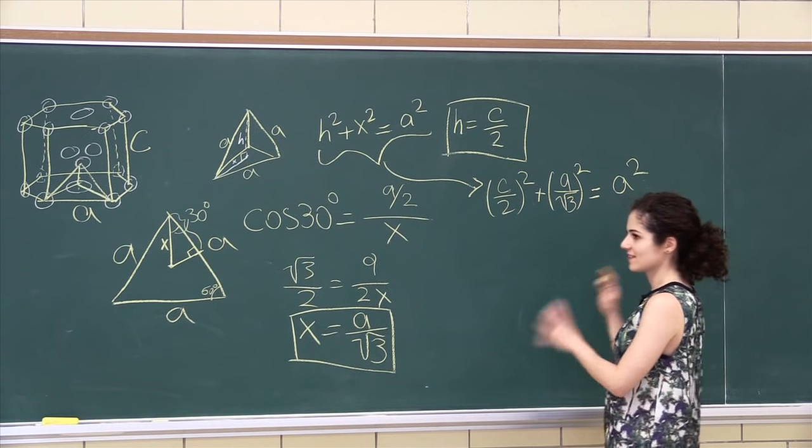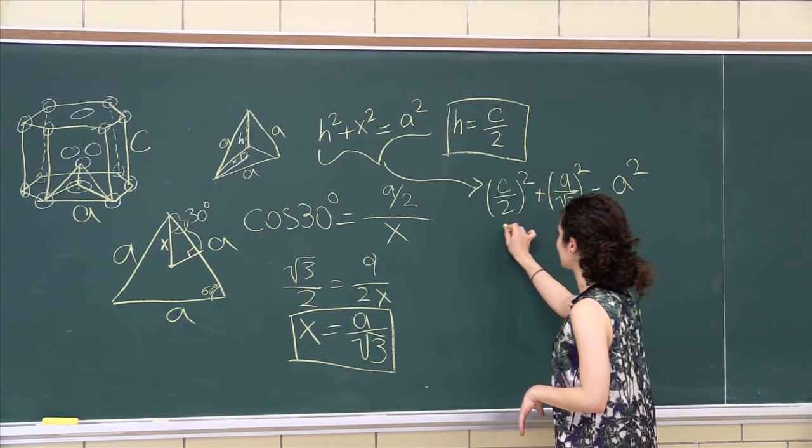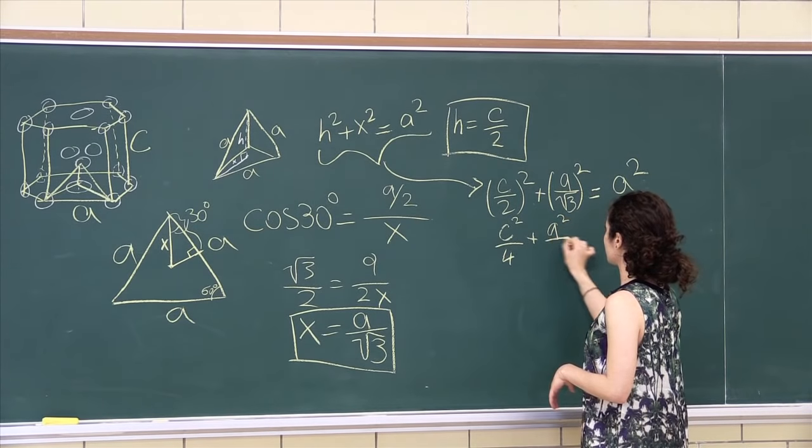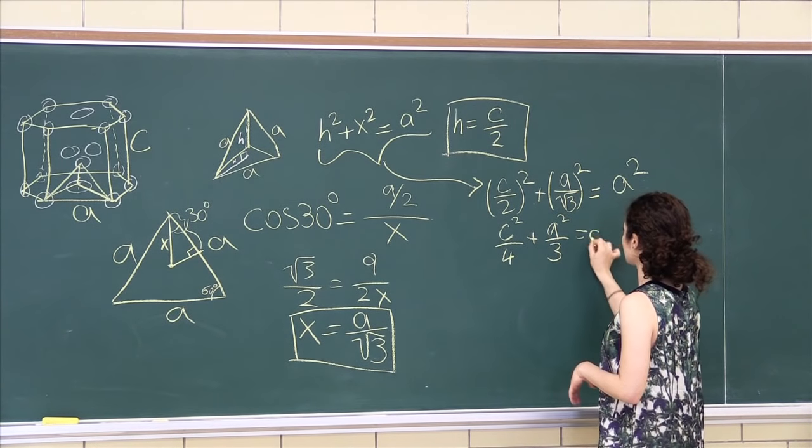Kind of easy, kind of, you gotta carry it through, it's kind of mathy. So C² over 4, A² over 3 is A².